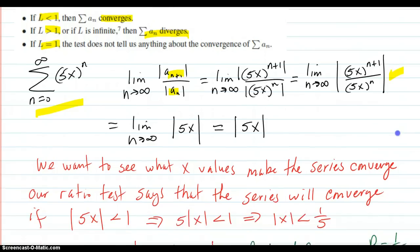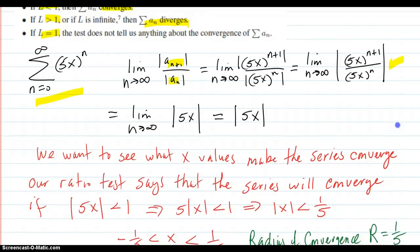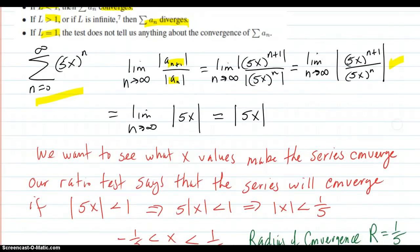And then just cancel those off, and you get 5x. And as n goes to infinity, absolute value of 5x is 5x.